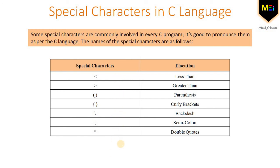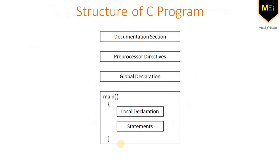Now let's have a look at the structure of a C program. This particular structure of a C program should be followed every time whenever it is desired to write a C program. Here we discuss some of the sections which are required right away, while some sections are discussed later as and when their use is required.